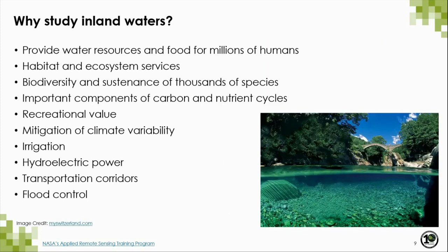Why is it important to study inland waters? Freshwater is essential for life on Earth. Millions of animals, including us humans, rely on freshwater ecosystems for their water and food needs, and they provide a number of habitat and ecosystem services. Freshwater ecosystems provide habitats and sustenance for thousands of species and can serve as transportation corridors between different environments. On a global basis, they are extremely important components of the carbon and nutrient cycles, aid in the mitigation of climate and flood control, and for humans they provide irrigation of crops, hydroelectric power, and recreational spaces.